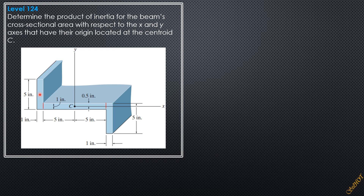The centroid of the top rectangle is 2.5 inches above the bottom. Since this is the x axis, 2.5 is half of 5 inches. So its ȳ is positive 2.5, and subtracting 0.5 gives negative 5.5. For the bottom section, because it is symmetric with respect to the x axis, it has the same ȳ magnitude except ȳ here is negative 2 and x̄ is positive 5.5. The area is 5 times 1, so 5 square inches. The middle rectangle's product of inertia with respect to the centroid is zero because it is symmetric with respect to both x and y axes.